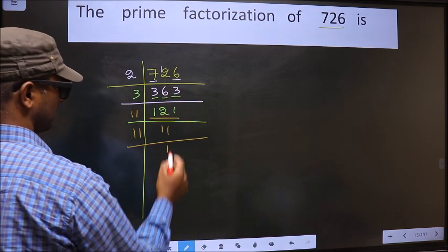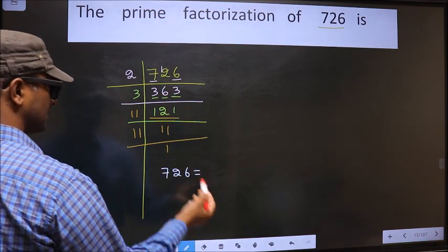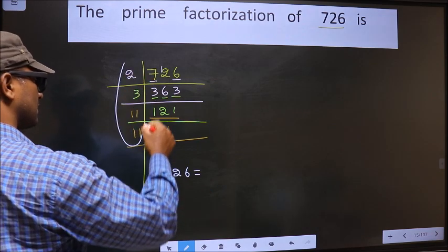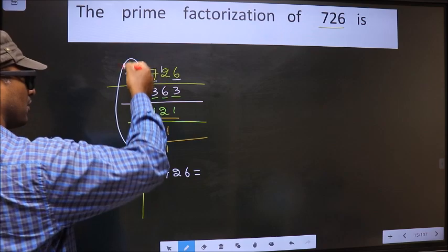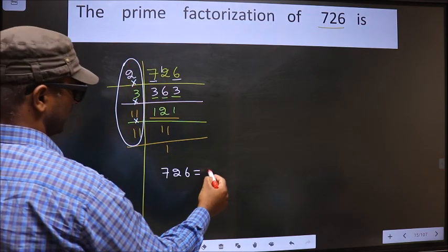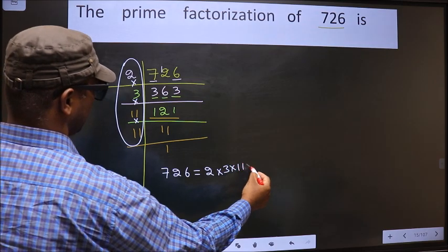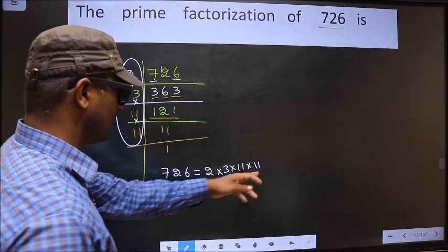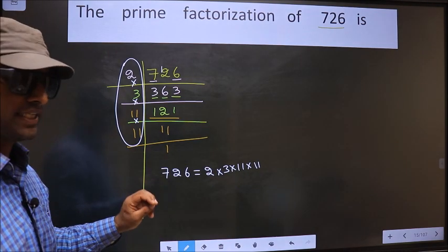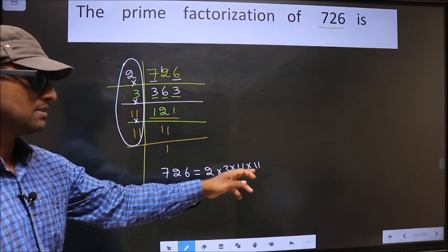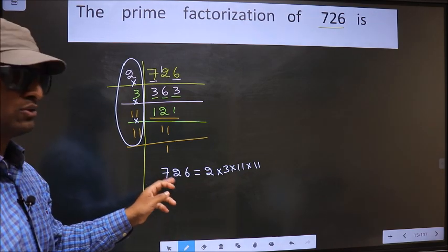So the prime factorization of 726 is the product of these numbers: 2 into 3 into 11 into 11. This is the prime factorization of 726. This is also called the product of prime numbers of 726.